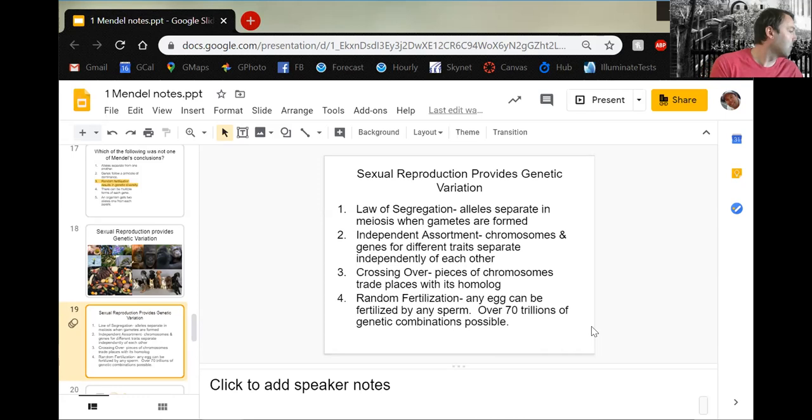Independent assortment - this one is on page 317 in the second section. Crossing over - this one is seen on page 324. Basically, some of your maternal and paternal DNA, your stuff from mom and from dad, is going to exchange into unique combinations during meiosis or sperm and egg formation. And then random fertilization - there could be any combination of the unique sperm and the unique eggs. There's 70 trillion possible combinations for humans, which is kind of bananas. Let's look at each one of these.